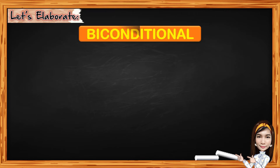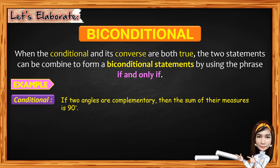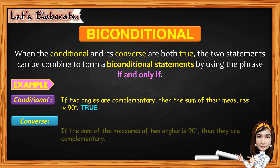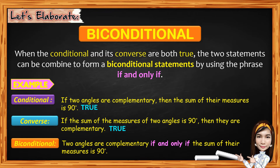Now, we have here what we call the biconditional. When the conditional and its converse are both true, the two statements can be combined to form a biconditional statement by using the phrase if and only if. For the conditional: if two angles are complementary, then the sum of their measures is 90 degrees — and that is true. For the converse: if the sum of the measures of two angles is 90 degrees, then they are complementary — and that is also true. So we can combine it to form a biconditional: two angles are complementary if and only if the sum of their measures is 90 degrees.